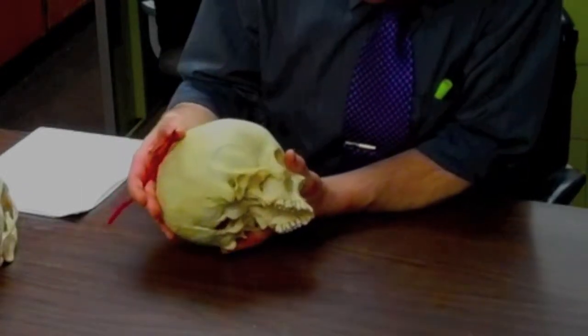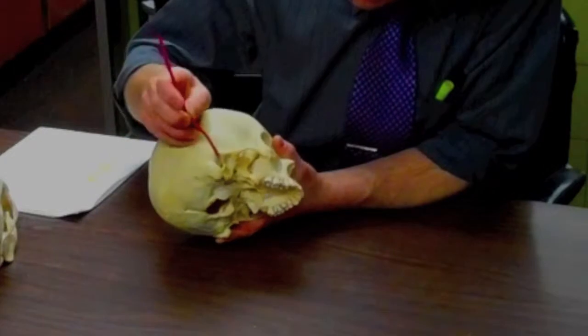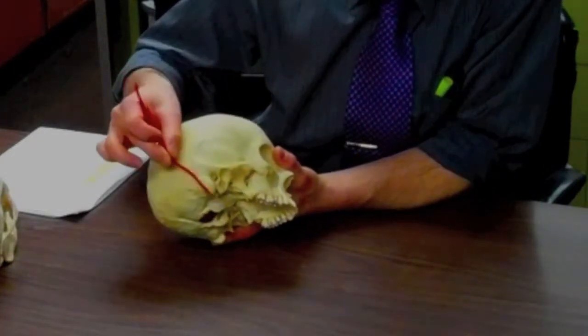Then we take the skull and we look from the side where we have the ear canal and the cheekbone right here. So that's the temporal bone right in this area.